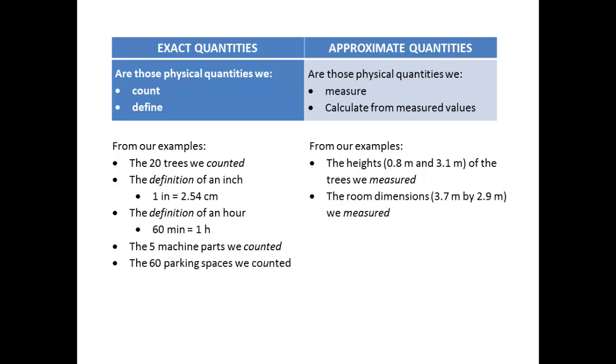Our room that we measured the dimensions of—3.7 meters by 2.9 meters—again that's something that we measured and again just to one decimal place, so that is an approximate quantity. Now we could actually calculate the area of that room that we measured the dimensions for, and again since we're doing a calculation using measured values, that would be an approximate quantity. So the 3.7 times the 2.9, we calculate that out, we'll get 10.73 square meters.